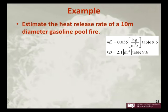Estimate the heat release rate of a 10 meter diameter gasoline pool fire, where from table 9.6 in the book, the asymptotic mass flux is 0.055 kilograms per meter squared second, and the k-beta term is 2.1 meters to the negative 1 power.